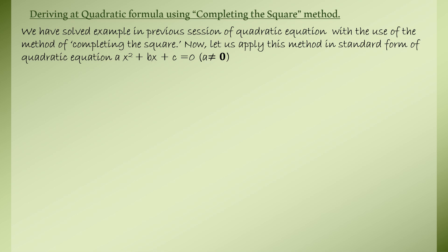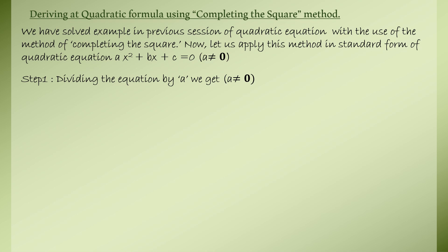So now to derive the quadratic formula, we will use the completing the square method. We start with ax squared plus bx plus c equals 0, where a is not equal to 0. Dividing the equation by a — since a is not equal to 0 — we get x squared plus b over a times x plus c over a equals 0. This division is done on both sides of the equation.